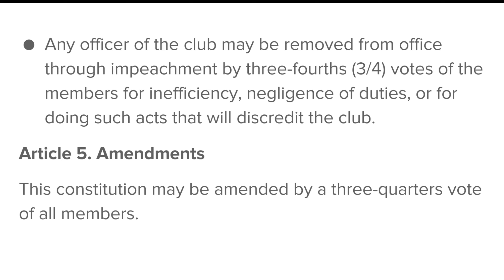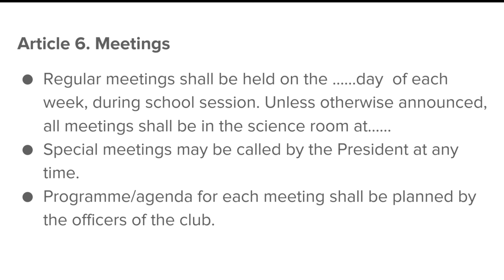In Article 5, amendments: this constitution may be amended by a three-fourths vote of the whole membership — meaning 75% of members must agree. If a club has 100 members, 75 must agree that these rules are correct for the constitution to be applied. Regarding meetings, regular meetings are held during the school session and can be held in the science room or any available space. Special meetings can be organized by the president at any time. The agenda for each meeting is planned by the officers of the club — they decide what program to conduct and what improvements are needed.